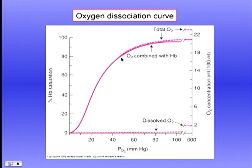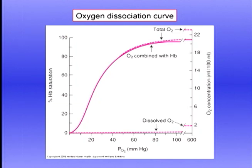Once we get below 60 into the 50, 40 PO2 range, the saturation rapidly falls. There are three anchor points on the oxygen dissociation curve: the first is a normal arterial PO2 of 100 with a saturation of about 97 percent; the next is a PO2 of about 40 in mixed venous blood giving a saturation of about 75 percent; and finally the P50, the partial pressure of oxygen for 50 percent saturation, which in normal subjects is about 27 millimeters of mercury.